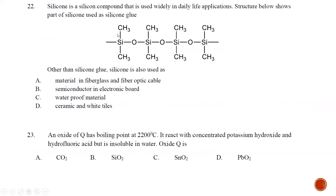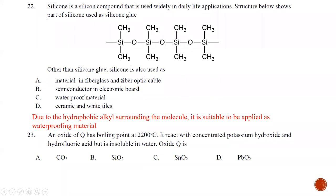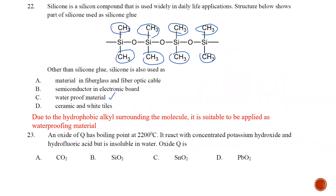Question number twenty-two: silicon is part of the silicone compound used widely in daily life applications. The structure shown is a part of silicone used as silicone glue. Other than silicone glue, silicone is also used to make: fiberglass or fiber optic — no, only glass can, not silicone. Semiconductor in an electronic board — no. Waterproof material — yes, because of the hydrophobic properties of the alkyl groups attached; water molecules cannot easily interact with the silicone. Ceramic and white tile — no, silicone is too soft. The best answer is C.